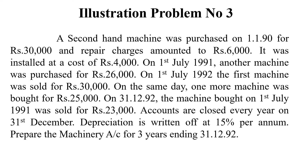On the same day, one more machine was bought for Rs. 25,000. On 31st December 1992, the machine bought on 1st July 1991 was sold for Rs. 23,000. So you have 3 machinery and 2 machinery are sold. Accounts are closed every year on 31st December. The depreciation write-off is 15% under the straight-line method.